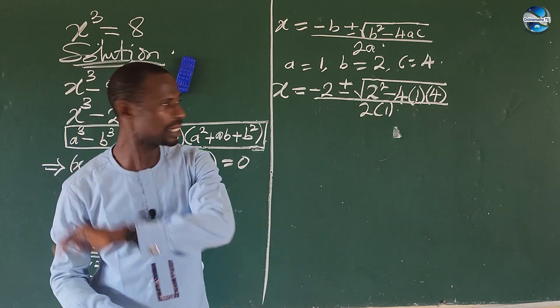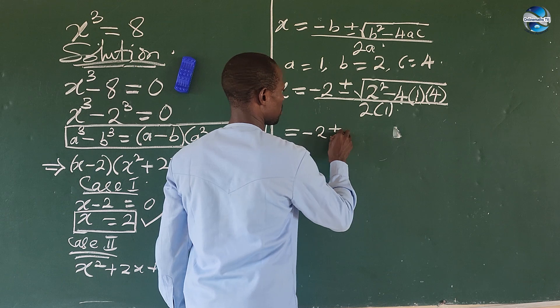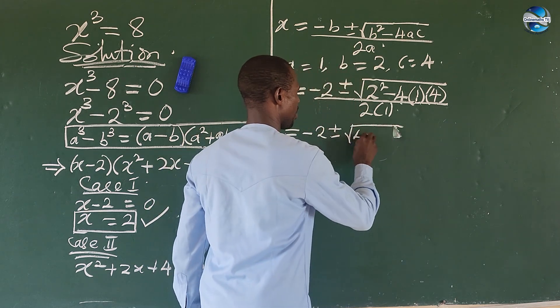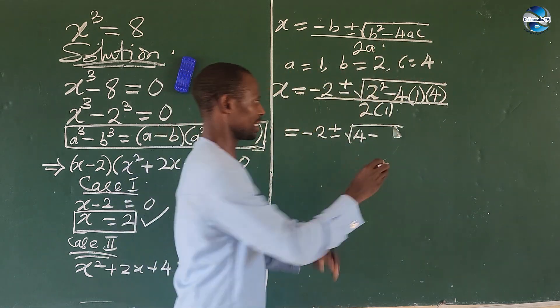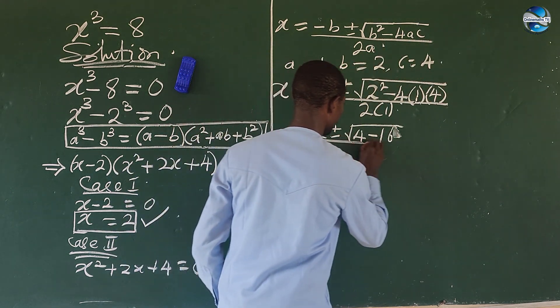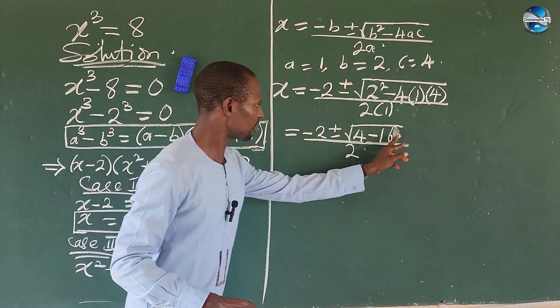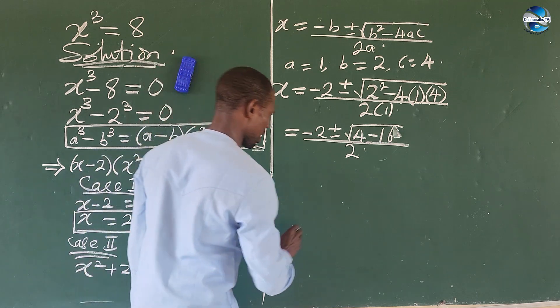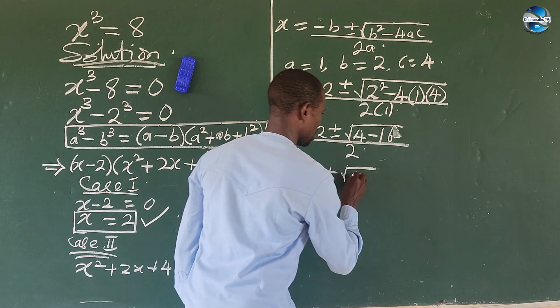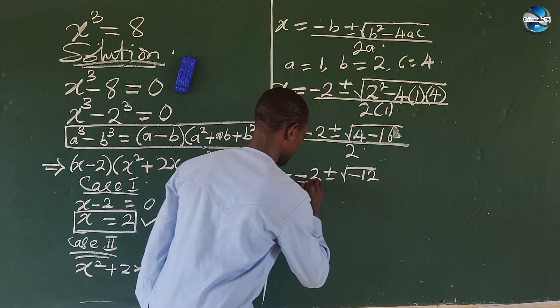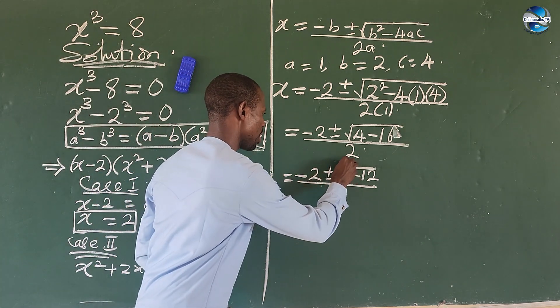What do we do here? Very easy. So let's open up here. So this must be equal to -2 ± √(4 - 16) all over 2. We can subtract this from this. So if we take this from this, this will give us -12. So this will now give us -2 ± √(-12) all over 2.